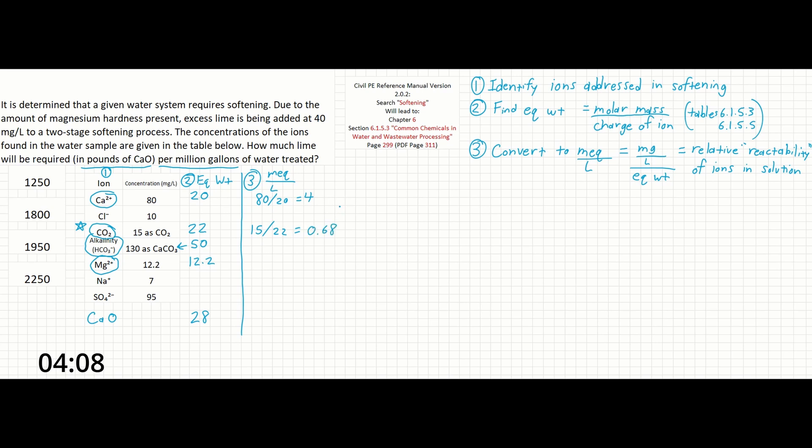15 divided by 22 is going to give us 0.68, 130 divided by 50 is going to give us 2.6, and 12.2 divided by 12.2 is going to give us 1.